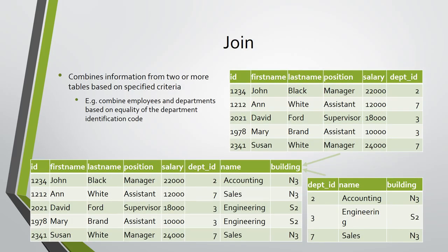The join operation combines information from two or more tables based on specified criteria. It is one of the most useful relational operations in order to retrieve from the database the information we are interested in. For example, to get the name of the department and the building each employee works in, we have to combine information from the two relations for employees and departments, such that each employee tuple is combined with the department tuple that has the same value in the department identification code attribute. More complex joins may combine information using more complex criteria.